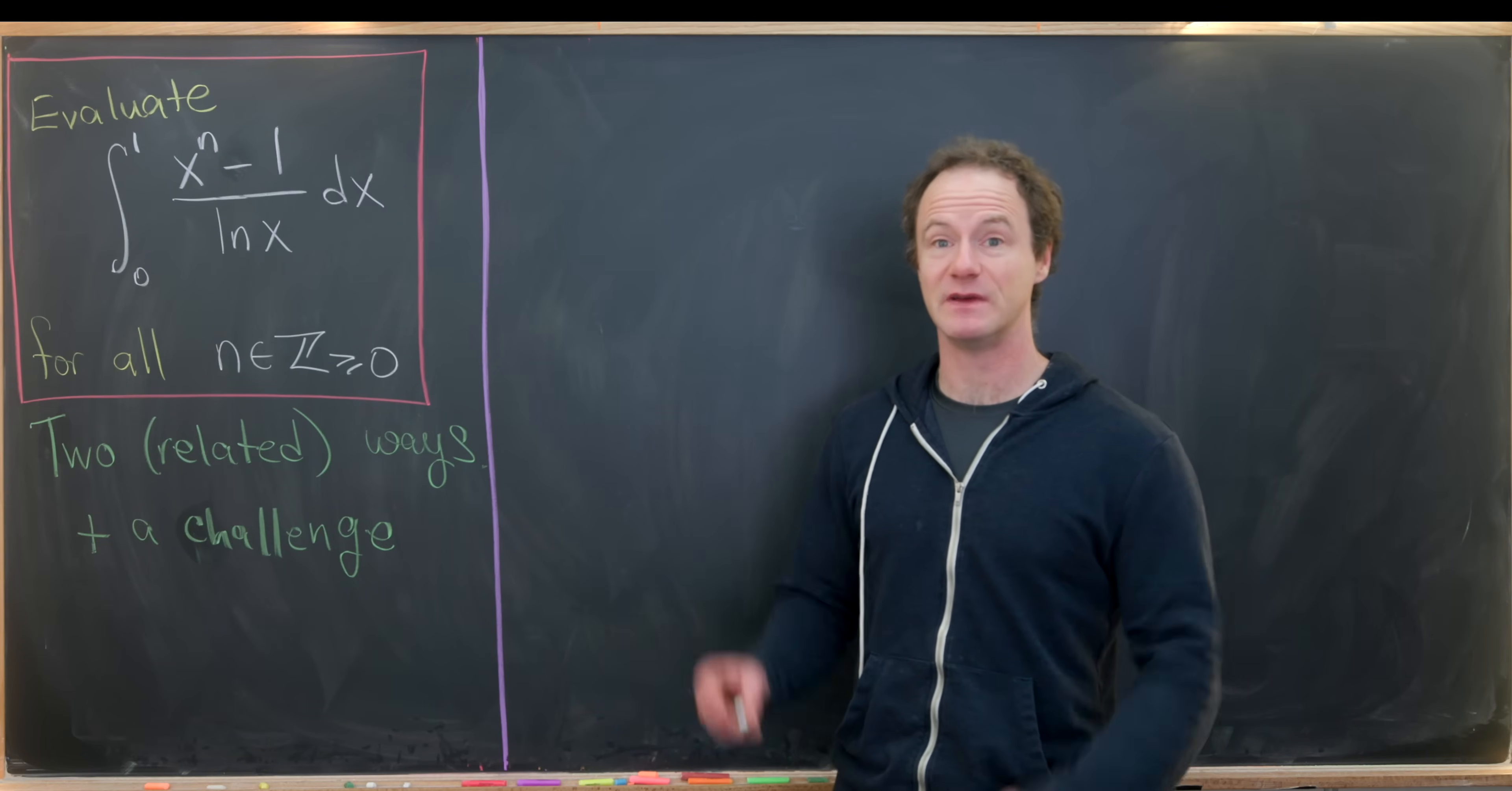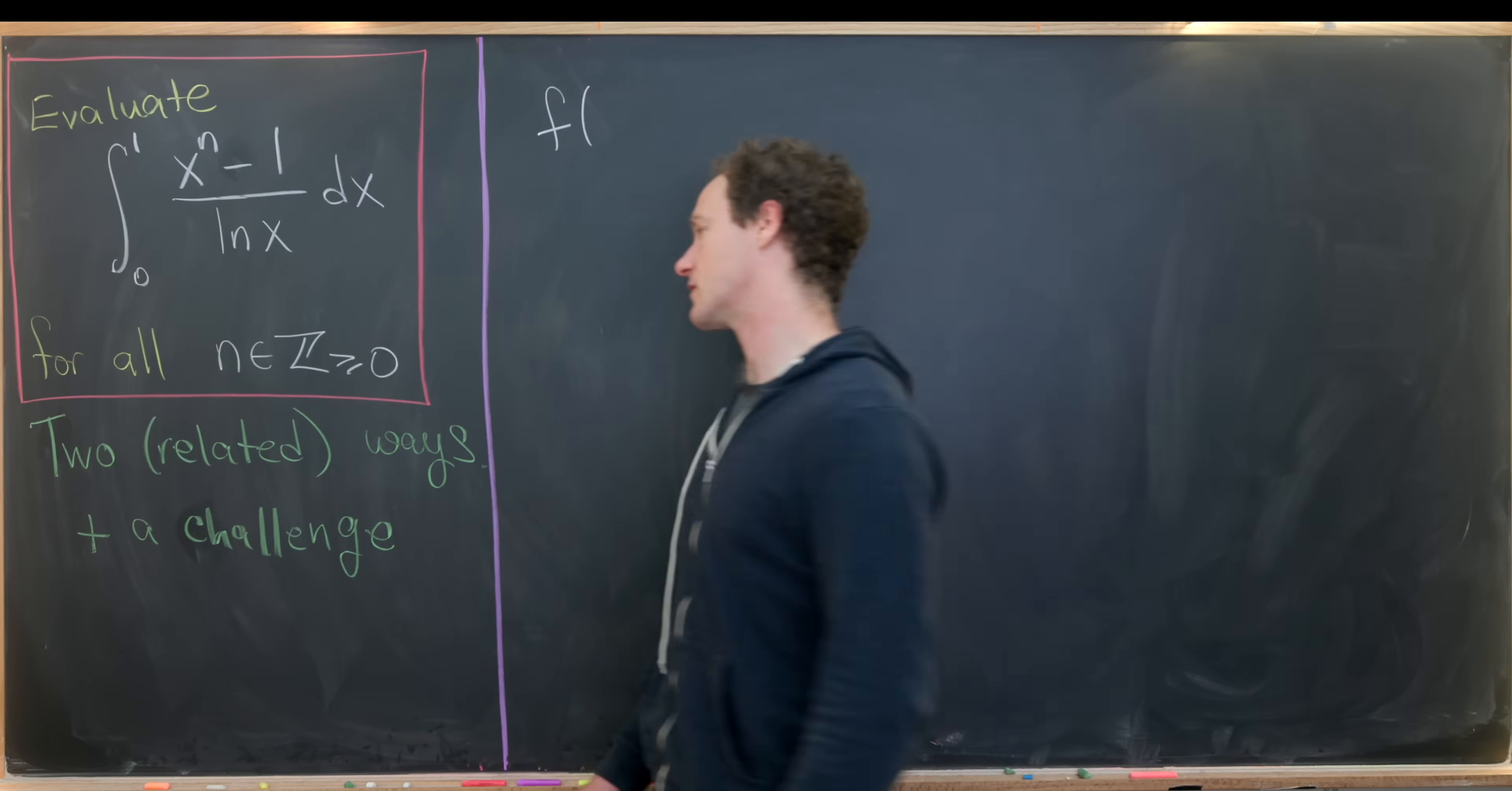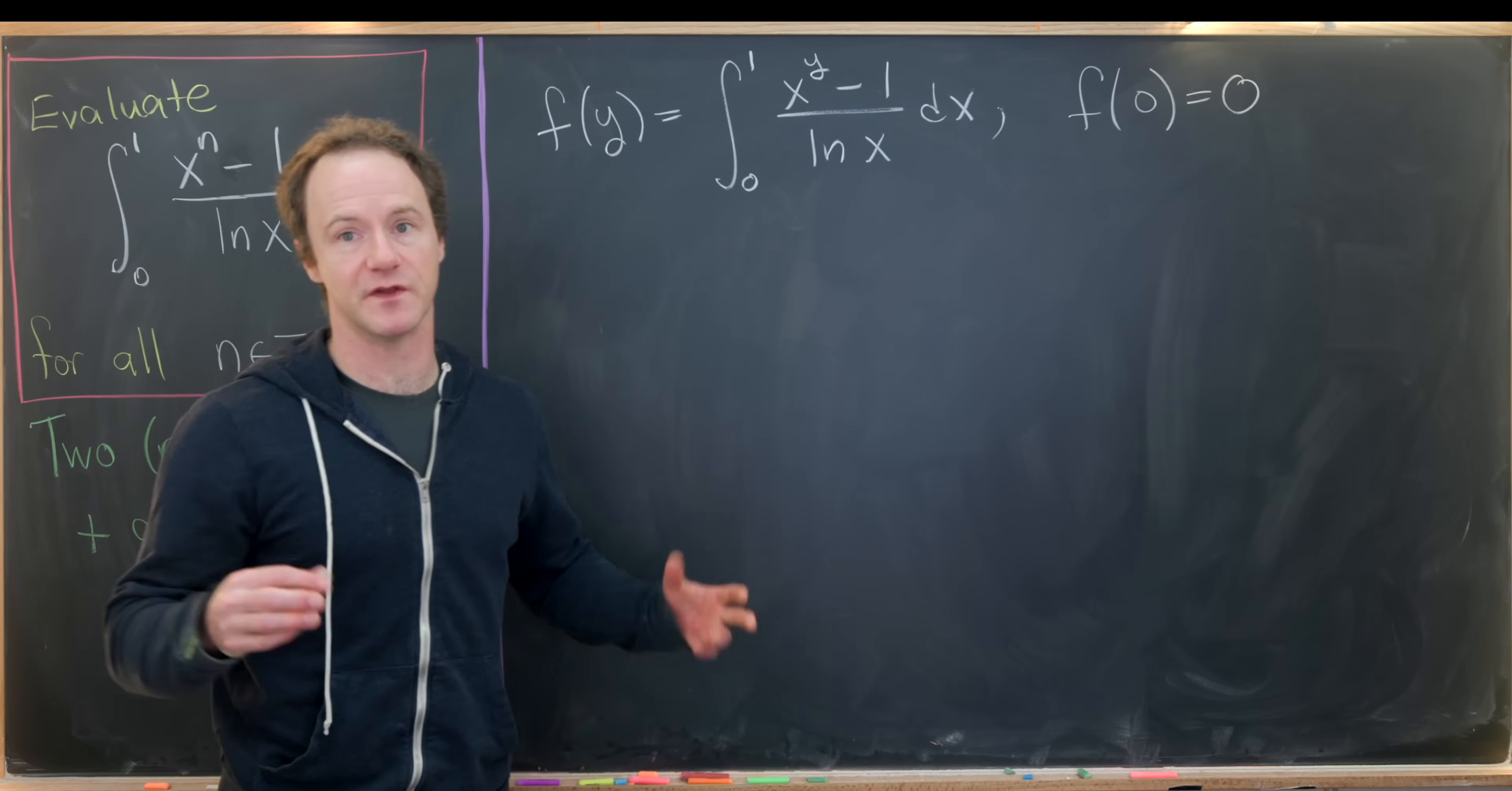So our first method will be using Feynman's differentiation under the integral sign technique. And so in order to do that, we need to define a function. And that function should have a continuous variable instead of this n, which is a discrete parameter or a discrete variable. We need a continuous variable here because we need to talk about taking the derivative. You can't quite do that with a discrete variable. So we'll define f of y to be equal to the integral from 0 to 1 of x to the y minus 1 over the natural log of x dx.